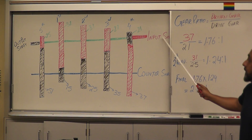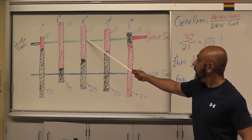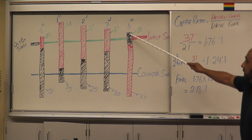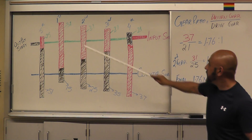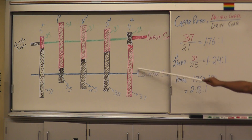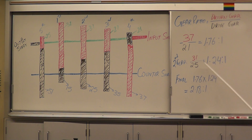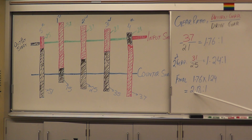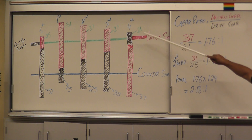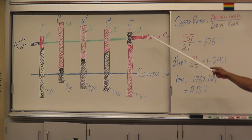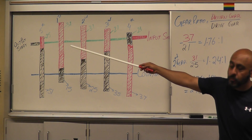For second gear, same approach — in and out. We already have the ratio of 1.76 to 1 for the first set. The ratio between the second gear set is 31 over 25, which gives you 1.24 to 1. Multiply both together and you get 2.18 to 1. So at 2.18 RPMs input, the output will only spin once.